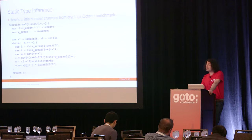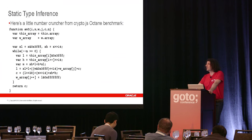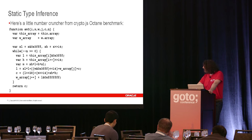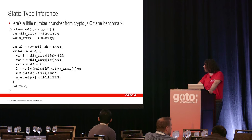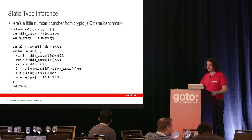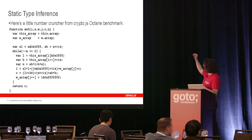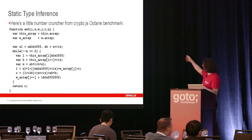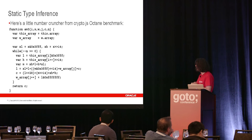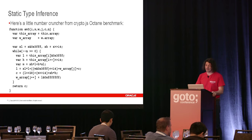Step of type inference. I will be using the Octane Crypto benchmark to demonstrate things. Here's a little hot function from the Crypto benchmark — this is the core of the benchmark. It's doing a lot of calculations: a lot of integer arithmetic, bitwise ANDs, shifts, retrieval from arrays, multiplications, additions, etc.